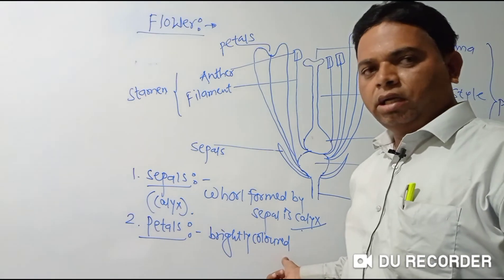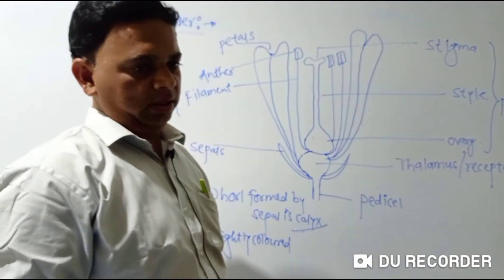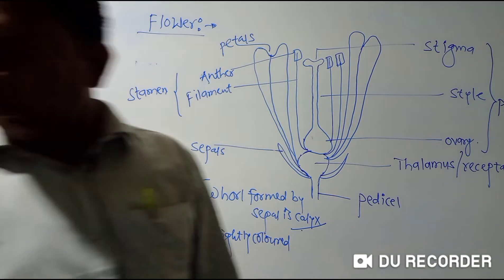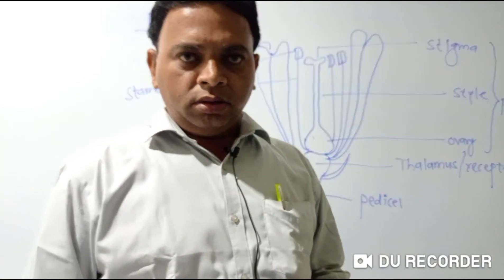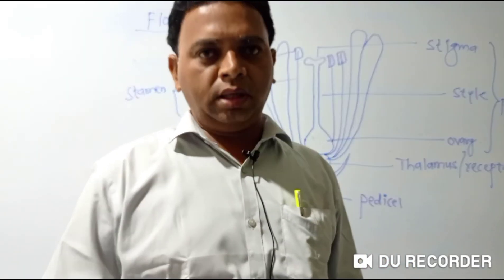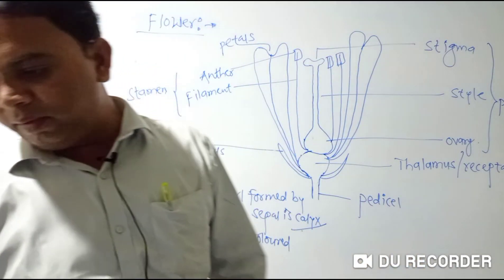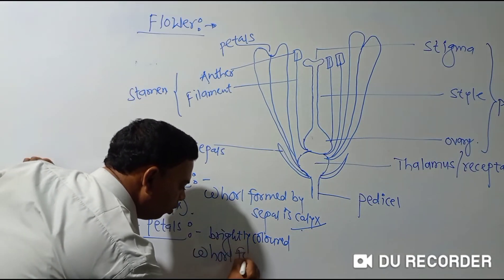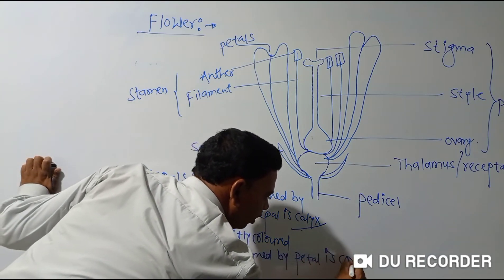Now we have to discuss the thalamus. Thalamus is nothing but the uppermost part of the pedicel which is wider. The pedicel is the stalk of the flower, and its uppermost wider part is called the thalamus — or receptacle; the other word for thalamus is receptacle. On the top of thalamus, there are four floral whorls that arise or develop.